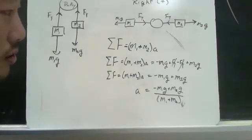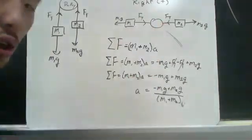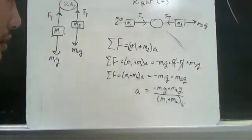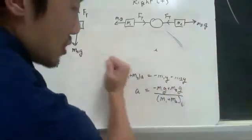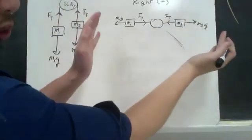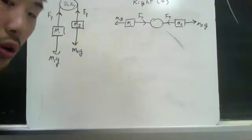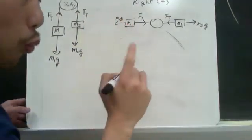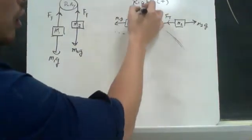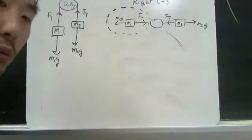Now, another type of problem that I could ask you is, I want to know what the tension is. So in order to find the tension, what you have to do first is understand that if we look at the system as a whole, you saw that the tension is canceled out. So what you have to do is take a look at one part of the Atwood machine.